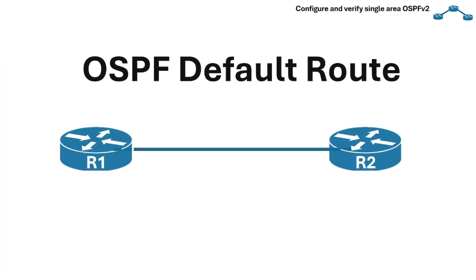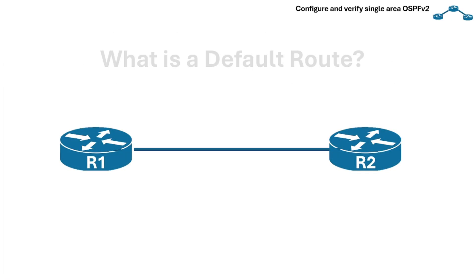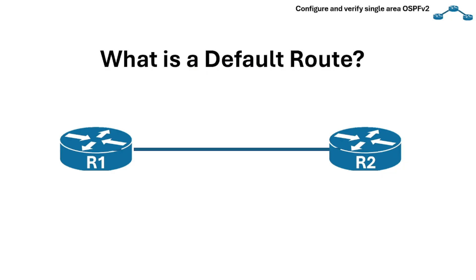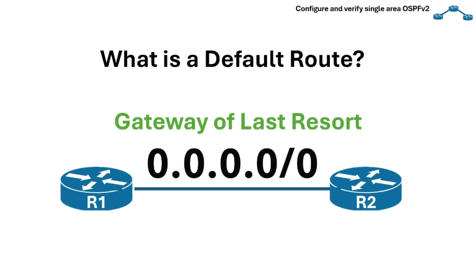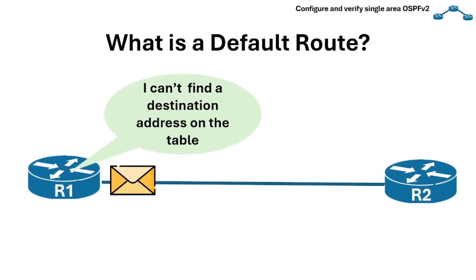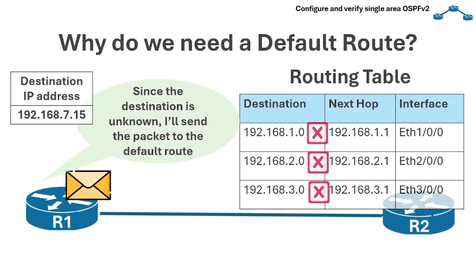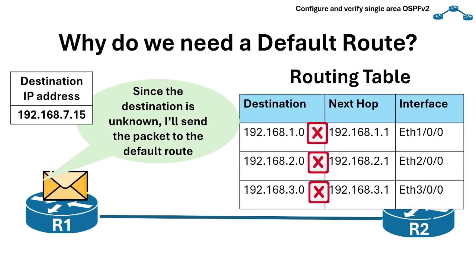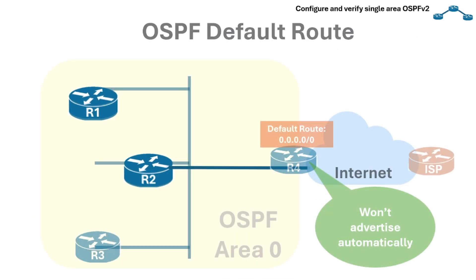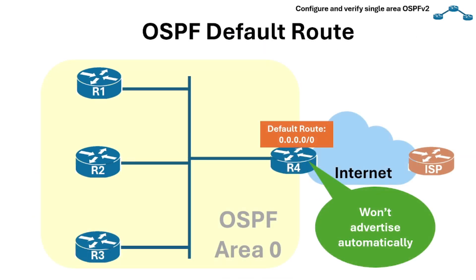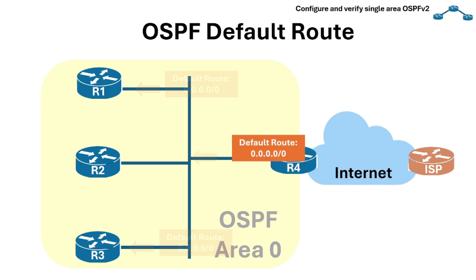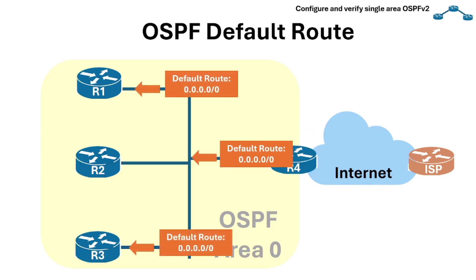Let's now discuss the OSPF default route. A default route is like a last-resort path — if a router doesn't know where to send a packet, it forwards it to the default next hop, allowing routers to forward packets to unknown destinations instead of dropping them. So even if a router like router 4 has a static default route, OSPF won't advertise it automatically to its neighbors. To share it with the rest of the OSPF network, you need to configure it first.